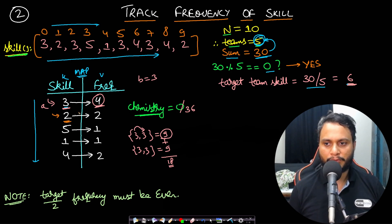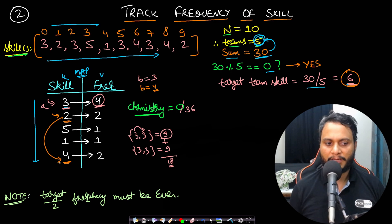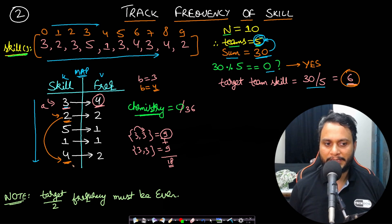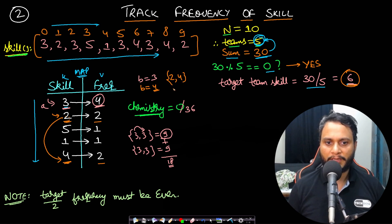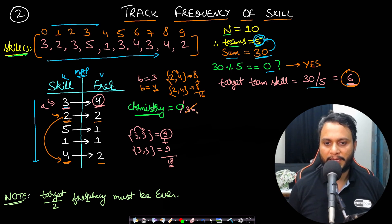Next, a = 2. Target = 6, so b = 6 - 2 = 4. Check: frequency of 4 equals frequency of 2, both are 2, so we can form 2 pairs of (2, 4). Chemistry: 2×4 = 8; there are 2 teams so 8 + 8 = 16. Adding 16 to our running total gives 52 (before division). The frequencies must match; otherwise equal pairing is impossible.